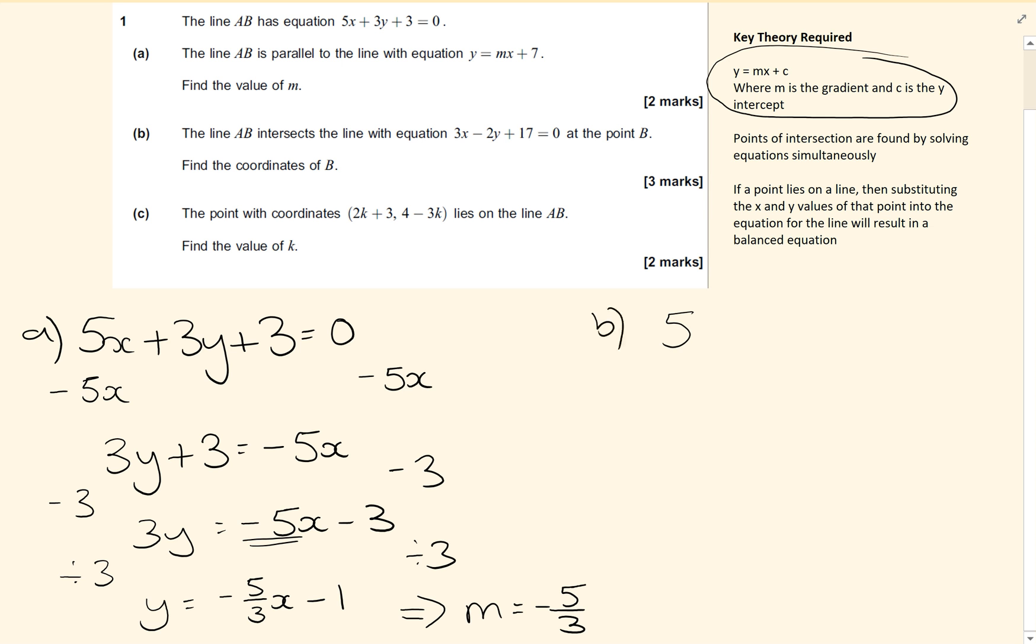So this is part b now. 5x plus 3y plus 3 equals 0, and 3x minus 2y plus 17 equals 0. Now what some students did was they tried to rearrange these two equations. I don't think it's needed. So if we just call this one equation 1 and equation 2.